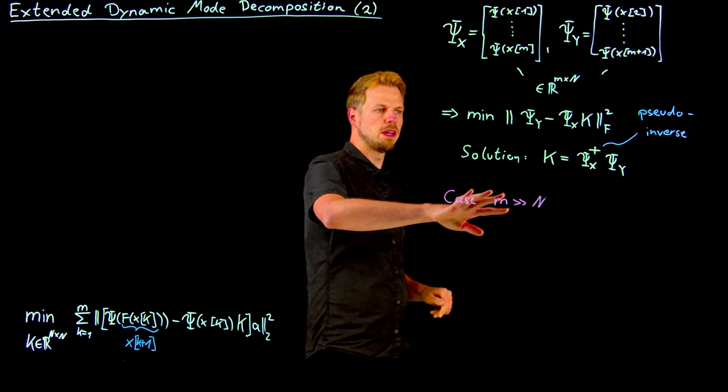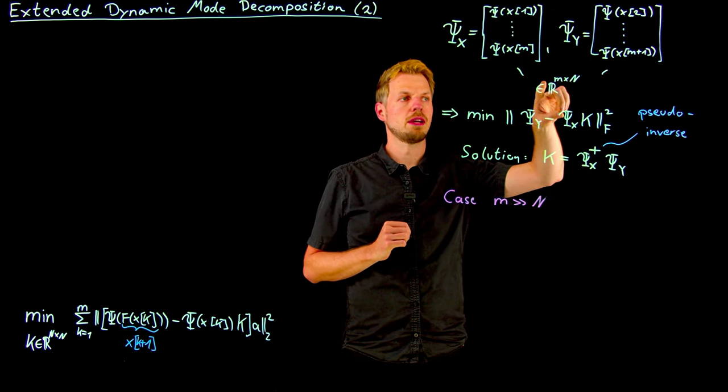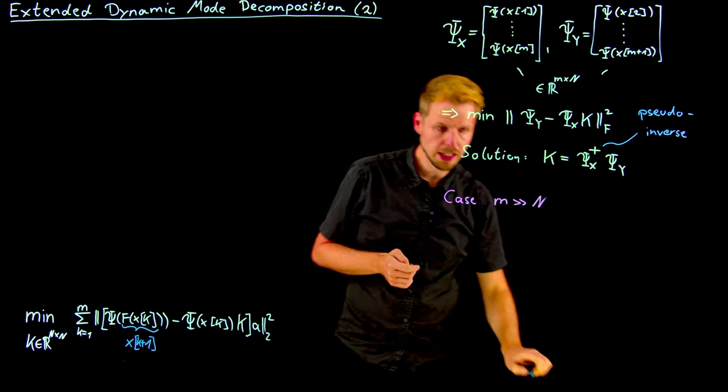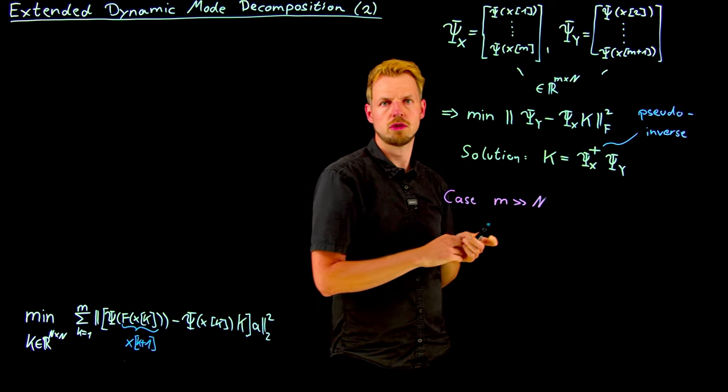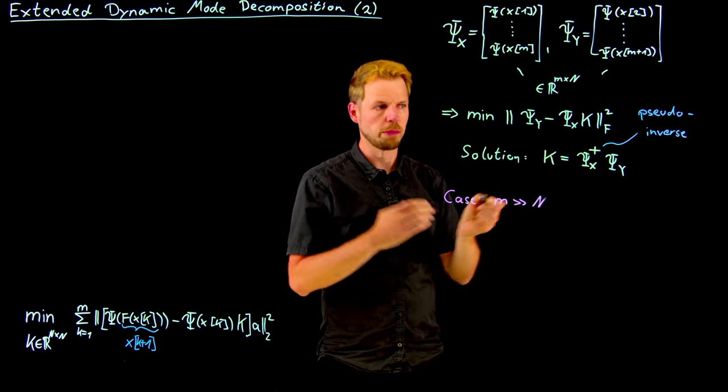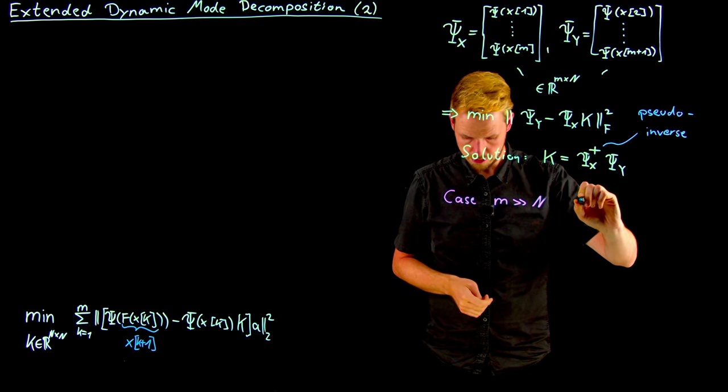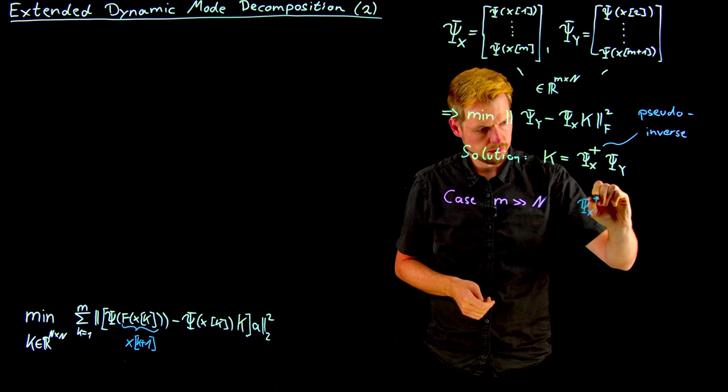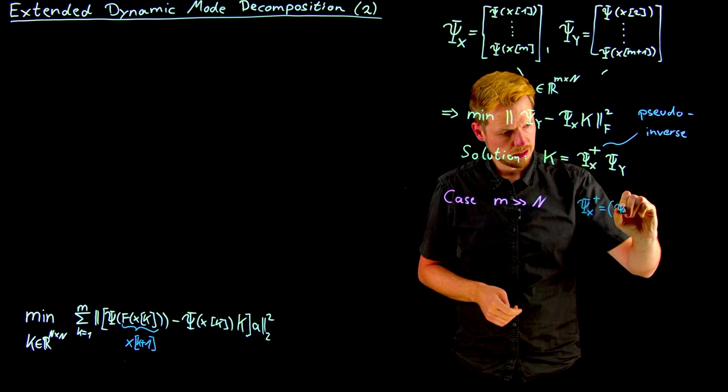And so maybe it would be better to replace this problem by a different one that exploits this dimensionality in a better way. And it can actually be done by using a couple of identities for pseudoinverses. You can find them in standard linear algebra books, also on Wikipedia.